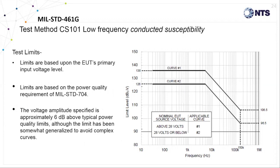The CS101 limit is segregated into two curves based on its input voltage. Curve two is intended for input voltages less than 28 volts or below, while curve one is intended for input voltages greater than 28 volts.